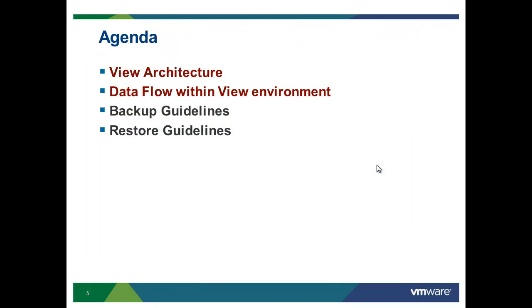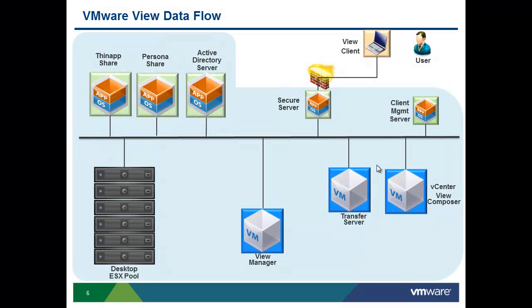Let's take a look at the data flow within the View environment so you can get a better understanding of how View works and how data flows within View Infrastructure. This will give you a better understanding of how to implement backup and understand which component has to be backed up after which. In this scenario, we have a customer who wants to connect to his virtual desktop. When the user wants to connect to View, he launches the View client on his machine, which attempts to authenticate the user against the View Manager server. The first server the session authentication request will hit is the View Secure Server, which acts as a PCoIP gateway.